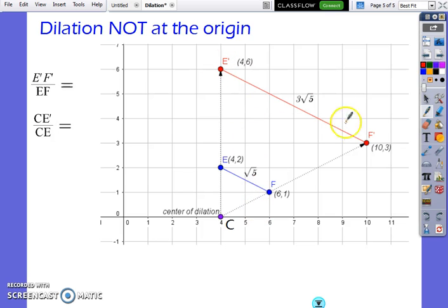So, E' F' I previously found this by using Pythagorean theorem. 3 times the square root of 5, and EF is the square root of 5. Simplify that and we get 3. We can also see this with the vectors coming from the center of dilation. Notice it is not at the origin to the corresponding vertices. So, CE' is 6 units and CE is 2 units. That simplified is 3.